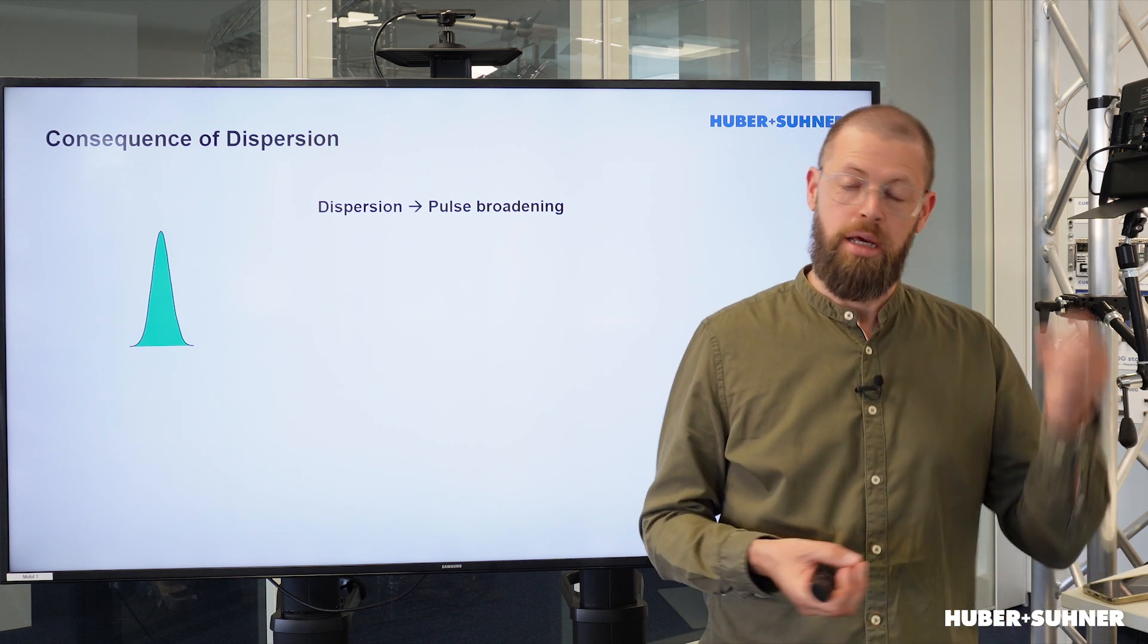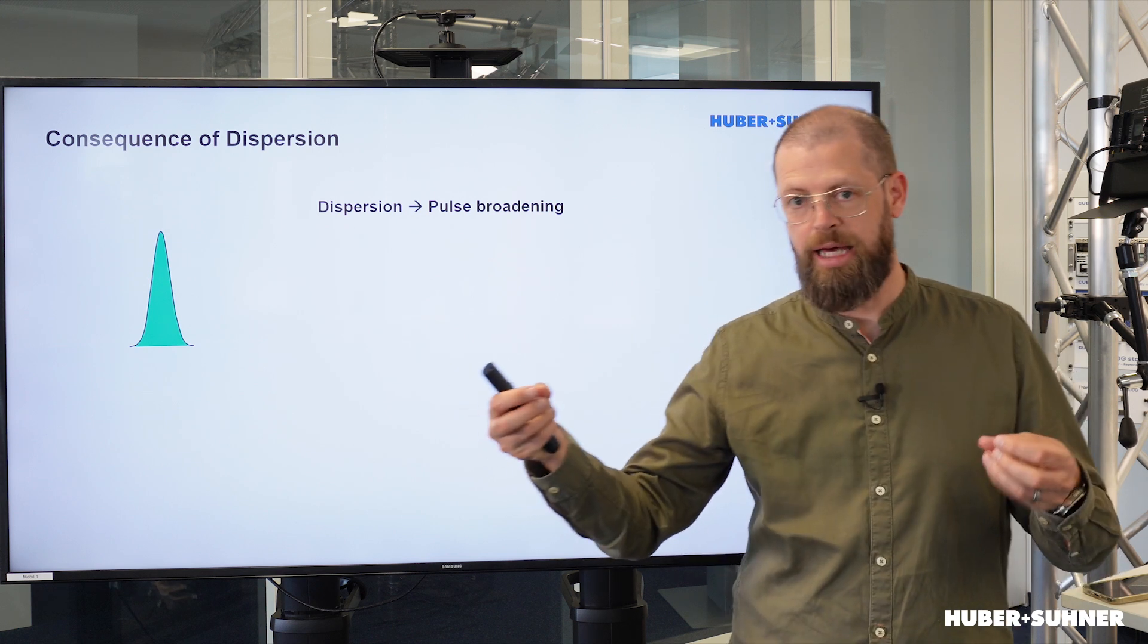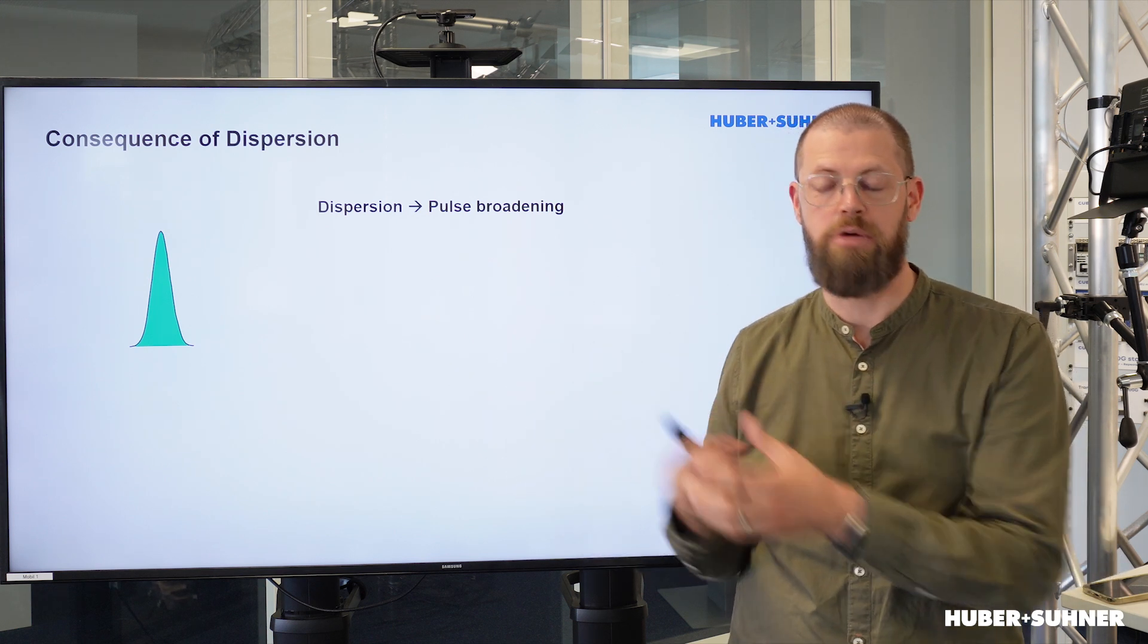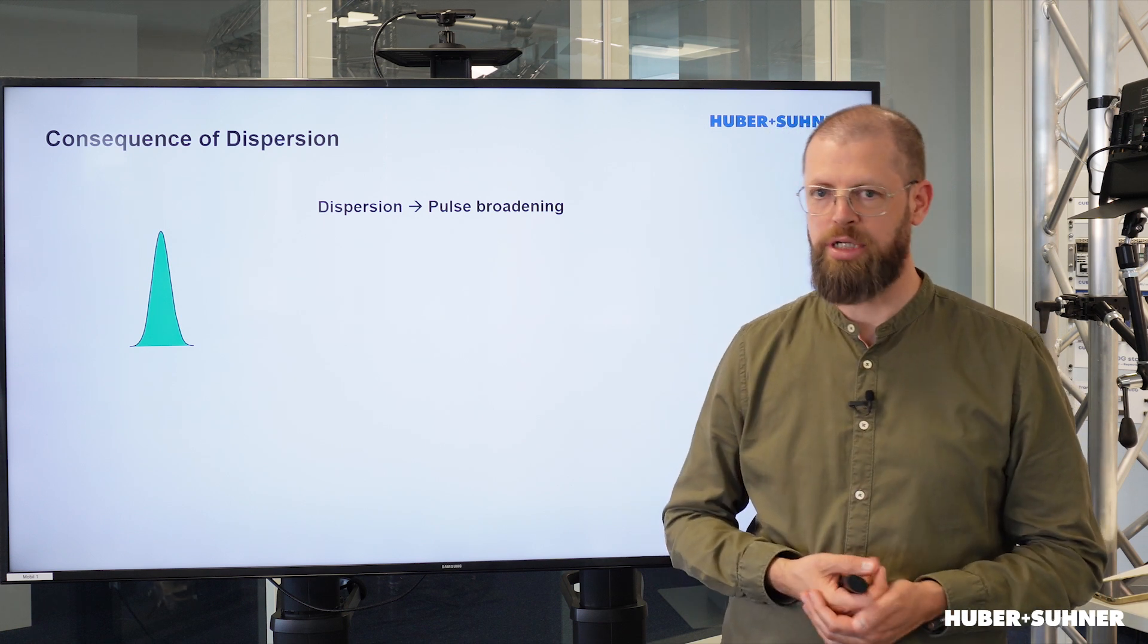With optical data transmission, we have a sequence of light pulses that go through the fiber cable. On the other side, we've got the receiver that detects those pulse signals and converts it back to an electrical signal.